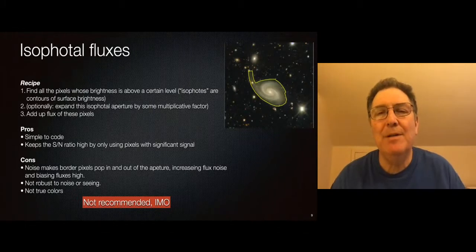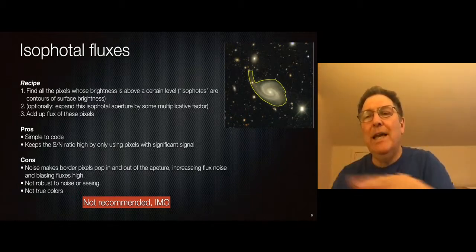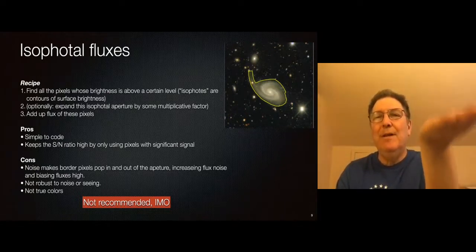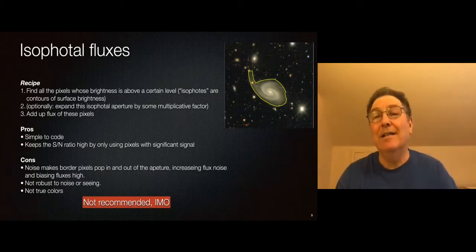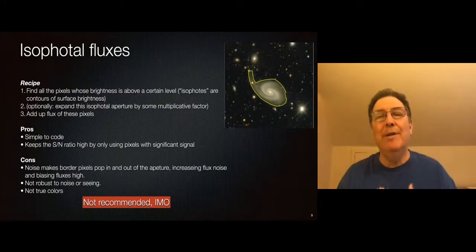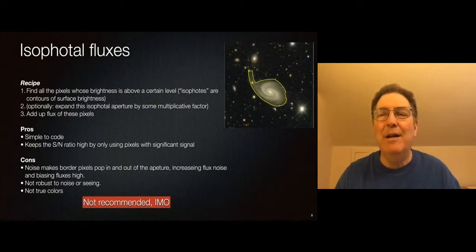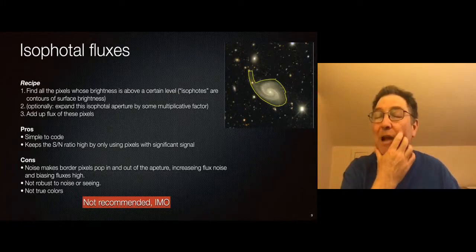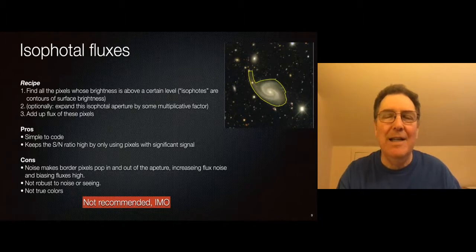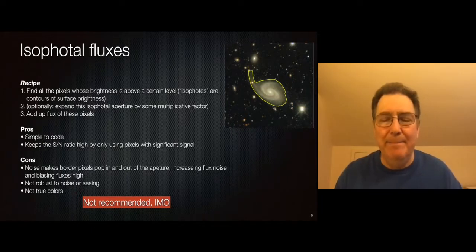There's another class called isophotal magnitudes, where you only count in the flux those pixels whose flux is above a certain level — a certain surface brightness or isophote. This is pretty simple to execute and does well for signal-to-noise because by only including pixels that have a lot of signal, you increase your signal-to-noise and don't use a lot of empty but noisy pixels. On the other hand, noise will make a pixel pop in or out of the aperture, which induces biases and makes it very hard to estimate the true noise level. The isophote might also be different in different bands after PSF smearing. I can't think of a lot of cases where you'd want to use these today.